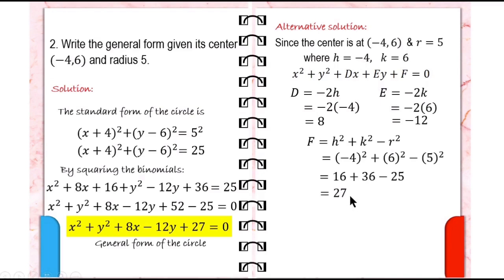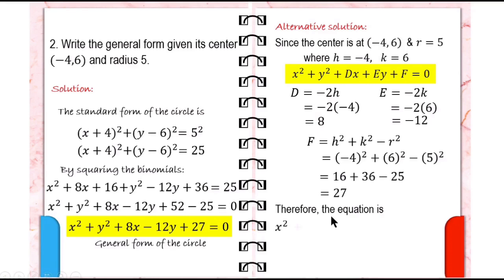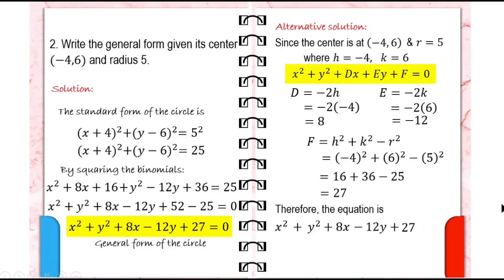Since we already have the values of d, e, and f, we can now write the general equation of the circle. Following the form, we write x squared plus y squared, then the value of d which is 8, copy x, then the value of e which is negative 12, copy y, and finally the value of our constant f, which is positive 27, equals 0.